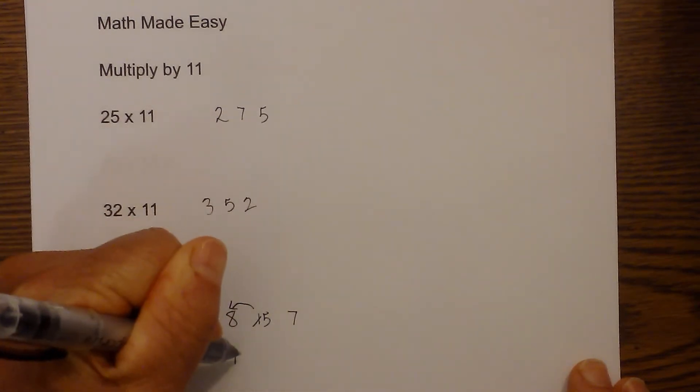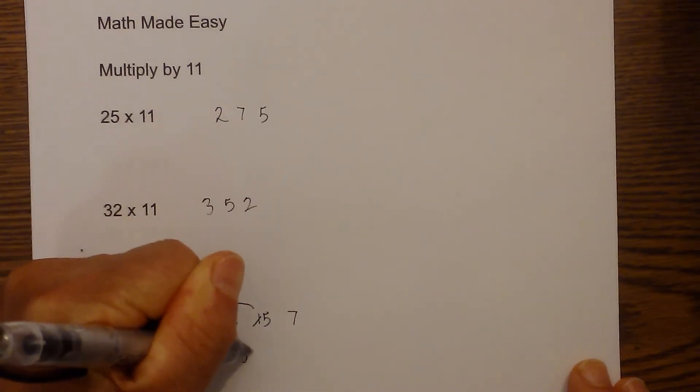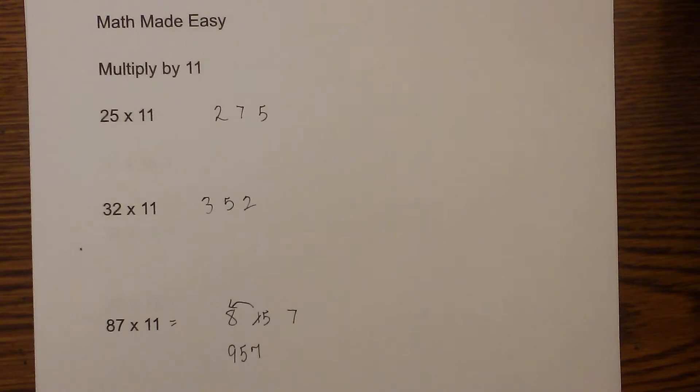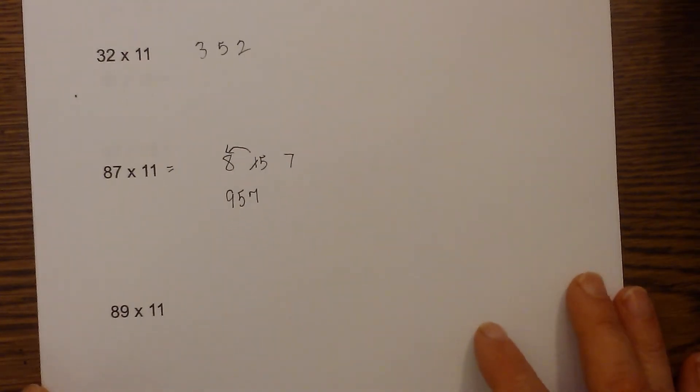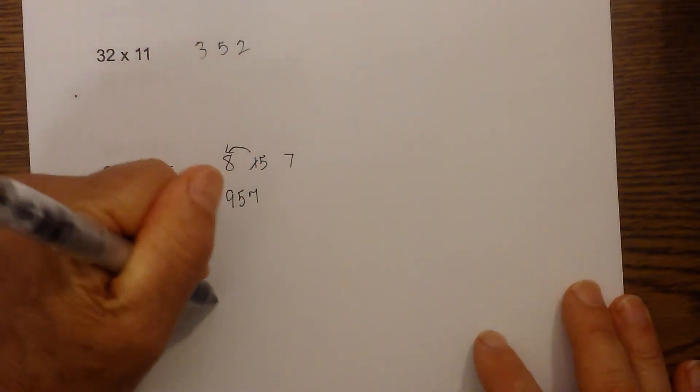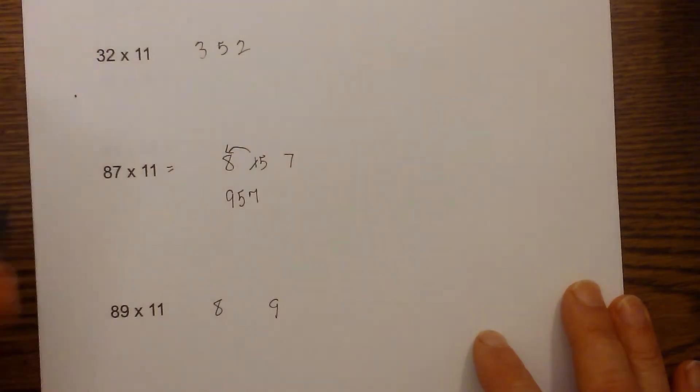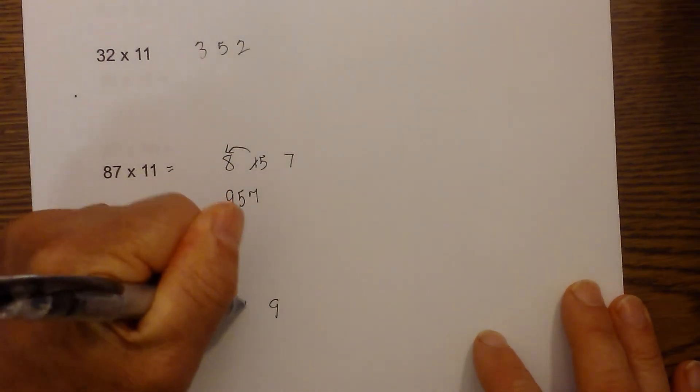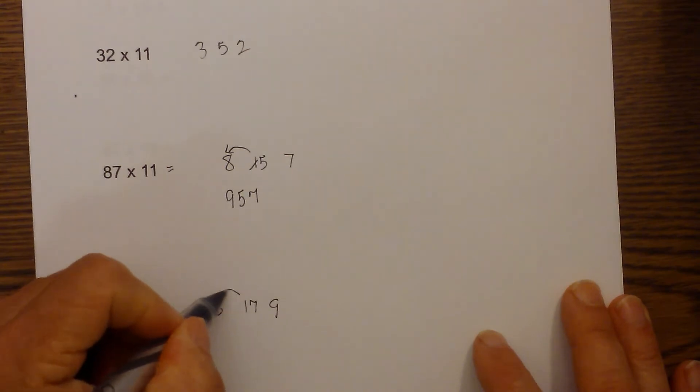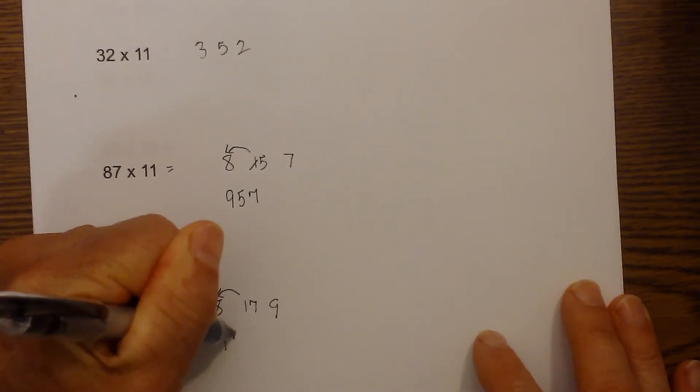So the 1 has been eliminated, so it's 957. And let me work another example like that. We have 89 times 11, and we're going to leave a space. 8 plus 9 is 17. So we'll move the 1 over to here, so that becomes 979.